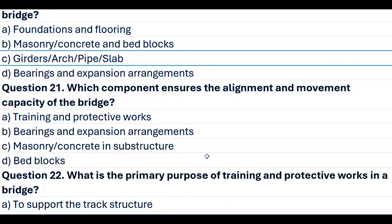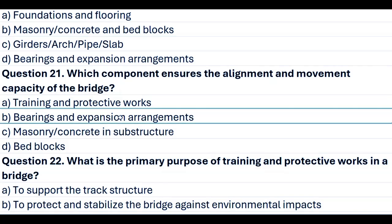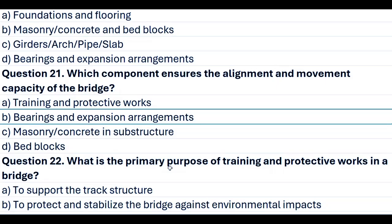Question 21. Which component ensures the alignment and movement capacity of the bridge? A. Training and protective works. B. Bearings and expansion arrangements. C. Masonry concrete in substructure. D. Bed blocks. Answer B. Bearings and expansion arrangements.